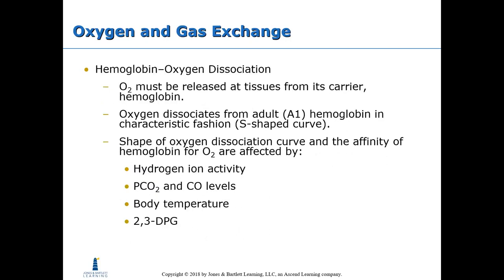Regarding hemoglobin oxygen dissociation: oxygen must be released at the tissues from its carrier hemoglobin. Oxygen dissociates from adult hemoglobin A1 in a characteristic S-shaped curve. The shape of the oxygen dissociation curve and the affinity of hemoglobin for oxygen are affected by hydrogen ion activity (pH), pCO2, CO levels, body temperature, and 2,3-DPG.